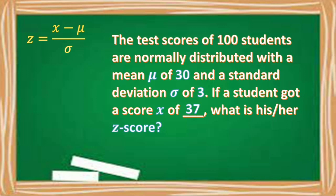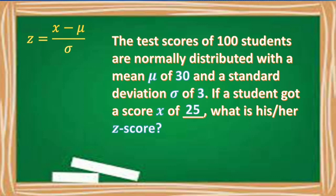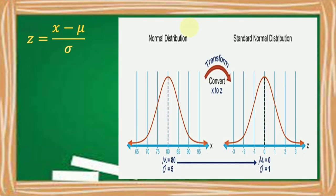If the score x is 37, then 37 minus 30 divided by 3 is 7 divided by 3, which is approximately 2.33. So the corresponding z-score of the score of 37 is 2.33. If the student gets a score of 25, then 25 minus 30 divided by 3 is negative 5 divided by 3, which is negative 1.67.